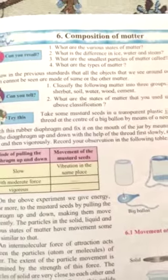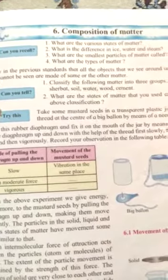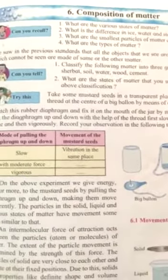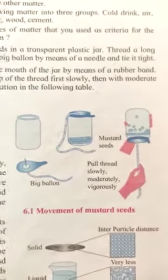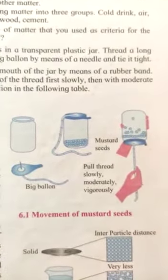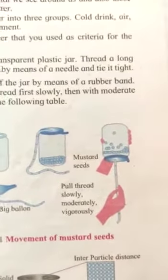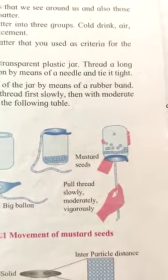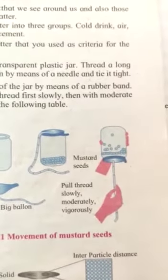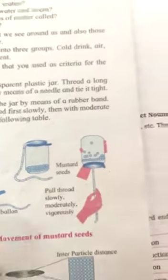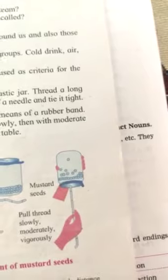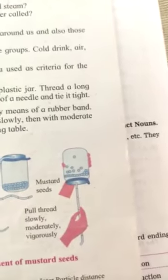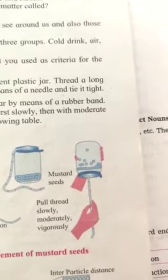Matter is anything which has mass. Let's see some examples. There is a try experiment. Take some mustard seeds in a transparent plastic jar, and thread a long thread at the center of the thing.